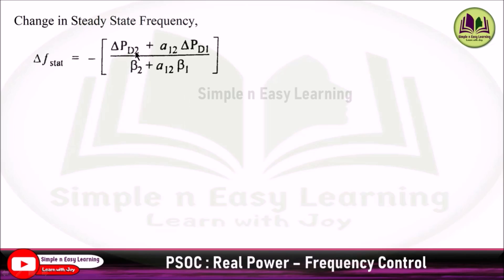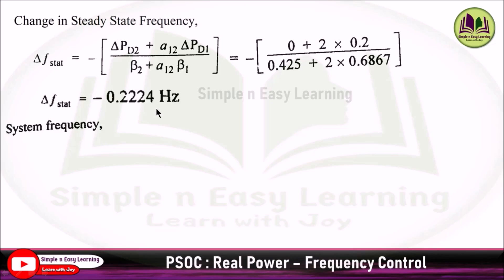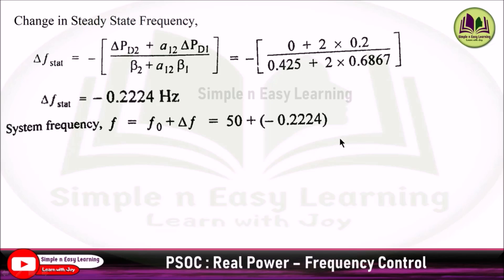Substituting into the steady-state frequency formula: ΔF_stat = −(ΔPD2 + a12·ΔPD1) / (β2 + a12·β1). With all calculated values substituted, ΔF_stat = −0.2224 Hz. The system frequency is therefore f = f₀ + ΔF_stat = 50 + (−0.2224) = 49.777 Hz.